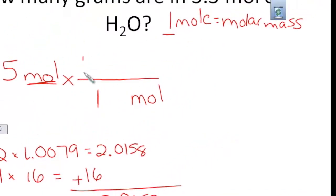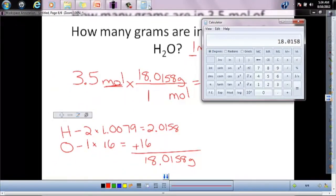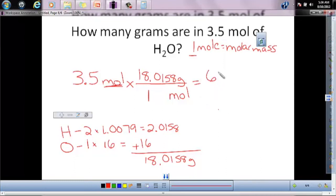Now that number, molar mass of H2O of water goes right here. Now it's just a simple math problem. So 3.5 times 18.0158. Alright, 63.0553. Now our moles canceled, so this is grams. Now, of course, you have to sig fig. There are two. Two right there. So there's your answer.